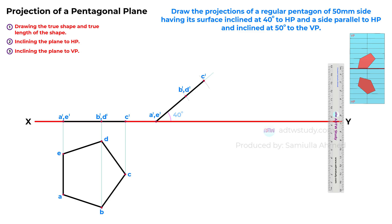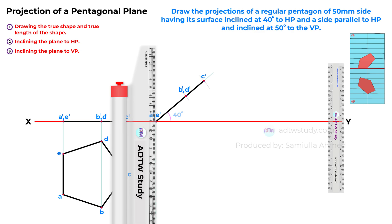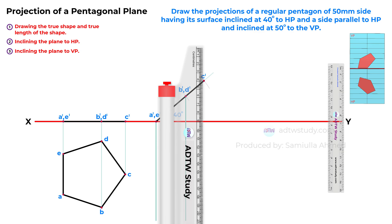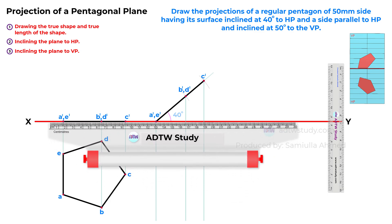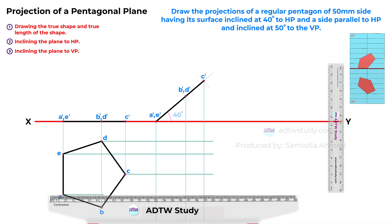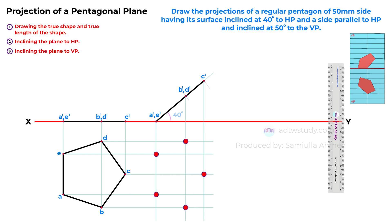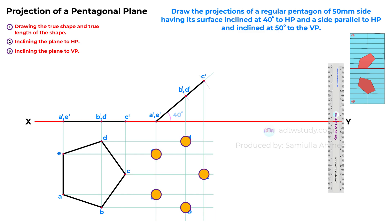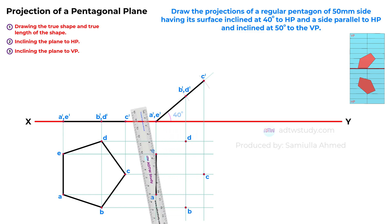To draw the top view, project lines from each of the points as indicated. Then project horizontal lines from the true shape of the pentagon. The intersection of these lines will provide us with new points, enabling the drawing of the top view of the inclined plane. The intersection of line A dash E dash with horizontal line A gives point A. Similarly, the intersection of these lines gives point E. These intersections also provide points B and D respectively, while the intersection of these lines gives point C. By joining these points, we obtain the top view of the pentagon inclined at a 40 degree angle with the horizontal plane.